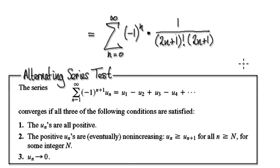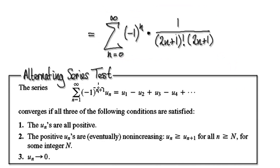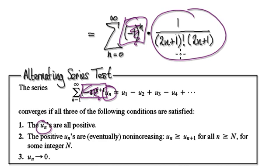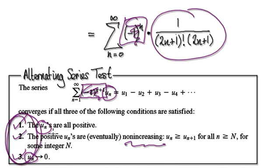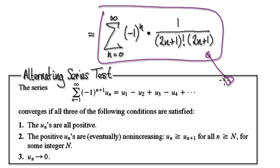So our next step is to show that this alternating series converges. In order to do that, we need to discard the alternating component and just concentrate on u_n. Make sure all the u_n's are positive, make sure they're all non-increasing, and make sure that the limit is zero. I'm assuming you can do all three because we've done it many times. As it turns out, this alternating series converges.